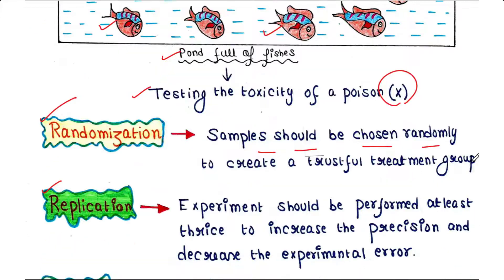Next is replication. In order to increase precision and decrease experimental error, an experiment should be performed at least three times. The result of a single experiment must not be easily accepted, so the same experiment has to be conducted at least three times.